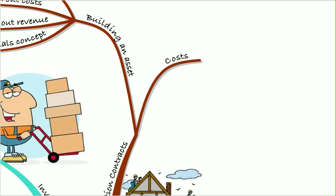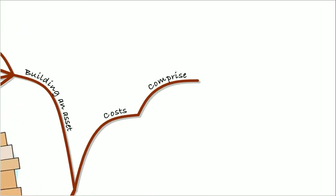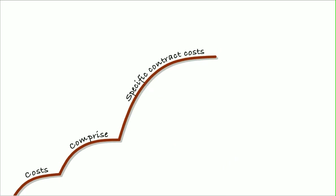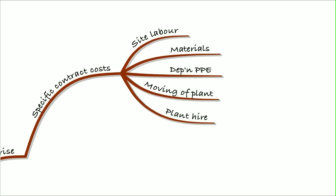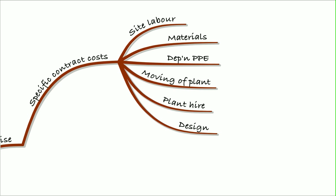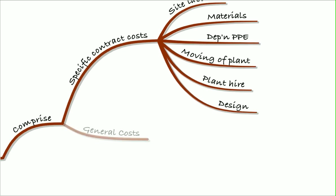So we need to learn what costs we can bring into a construction contract. So they will comprise specific contract costs like site labour, materials, depreciation, property, plant and equipment, moving of plant, plant hire and design. All of those specific contract costs.